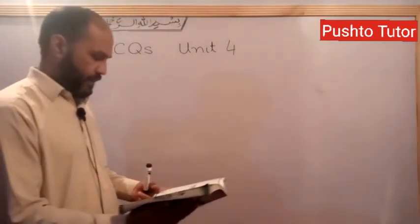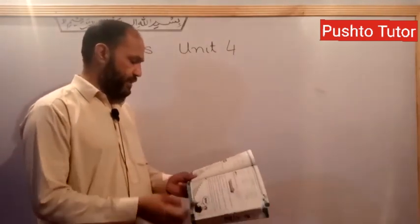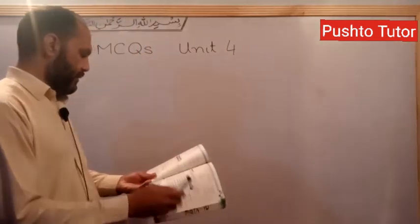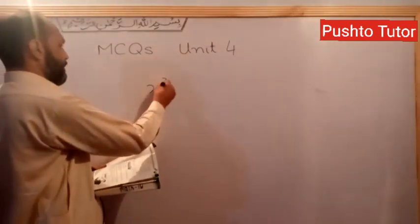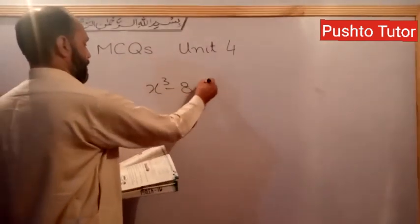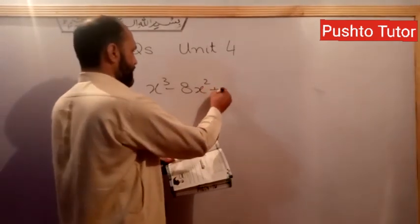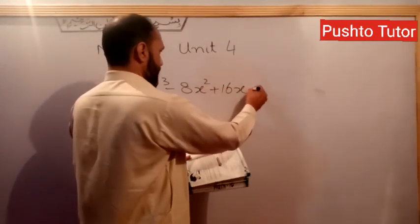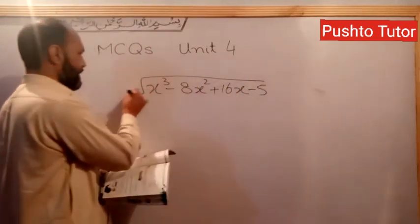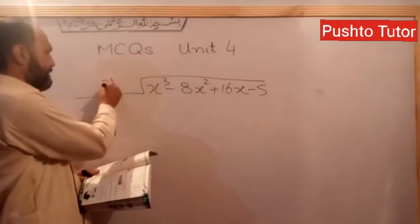Last question: what is the quotient when x³ minus 8x² plus 16x minus 5 is divided by x minus 5?